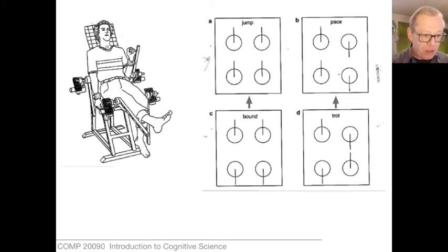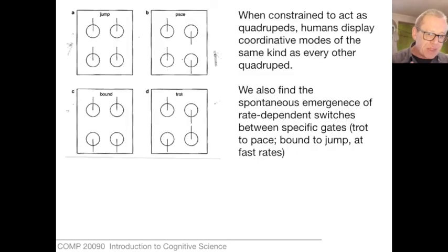So there are four phase relations among the limbs that are shown there in the drawing. There's the jump, the pace, the bound, and the trot. Those are four ways of coordinating the limbs. And people just fall into these without ever being told how to do it or without ever intellectually addressing the problem. Furthermore, as you speed this device up, the bound will shift to the jump and the trot will shift to the pace. So this rate-dependent reorganization of the control is turning out to be a very generic signature of movement. And the key finding here is that these completely naive humans, when they're forced to act as quadrupeds, display coordination just like any other quadruped, including rate-dependent switches between the specific gaits. So there's clearly something of great generality underlying this.